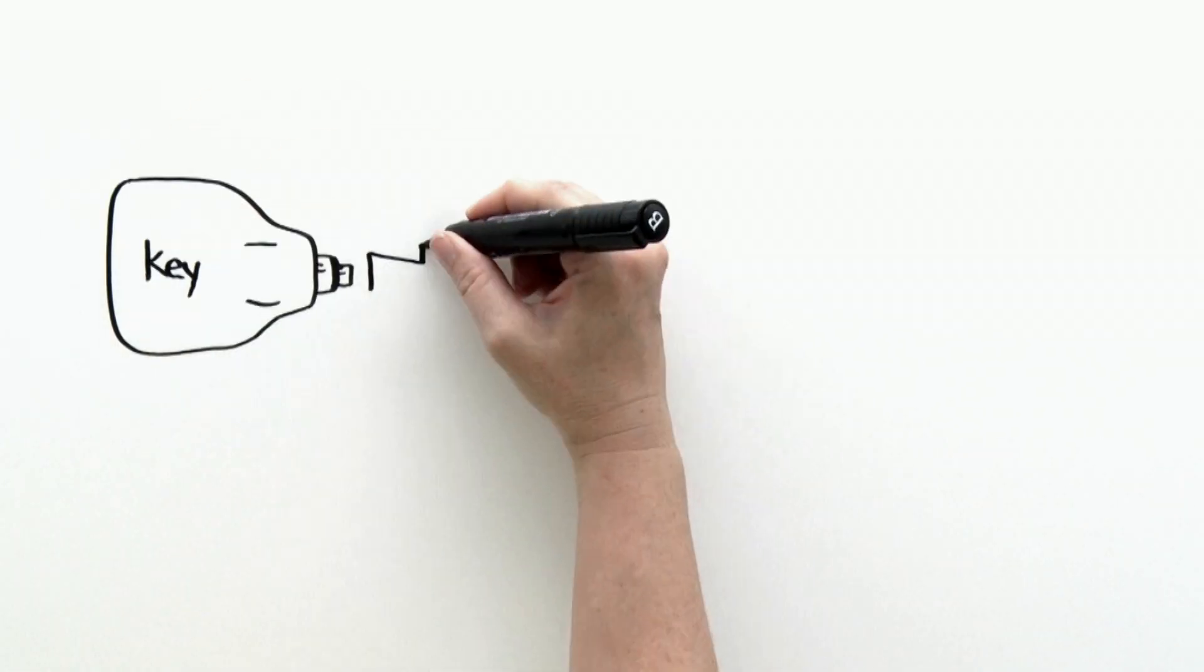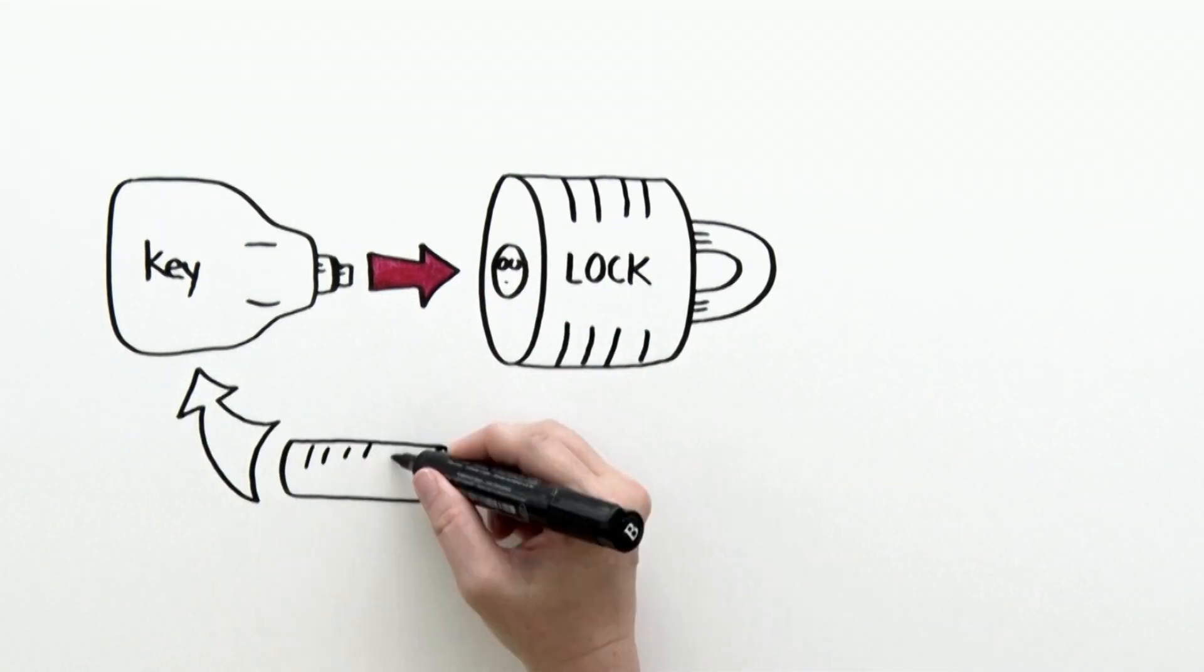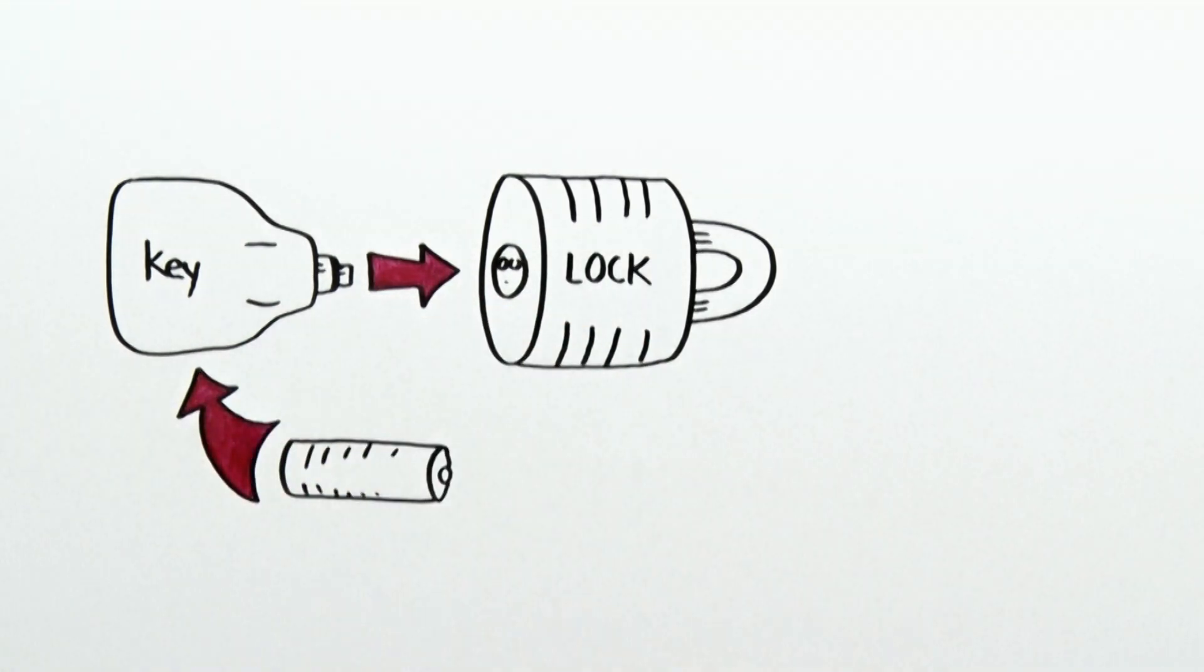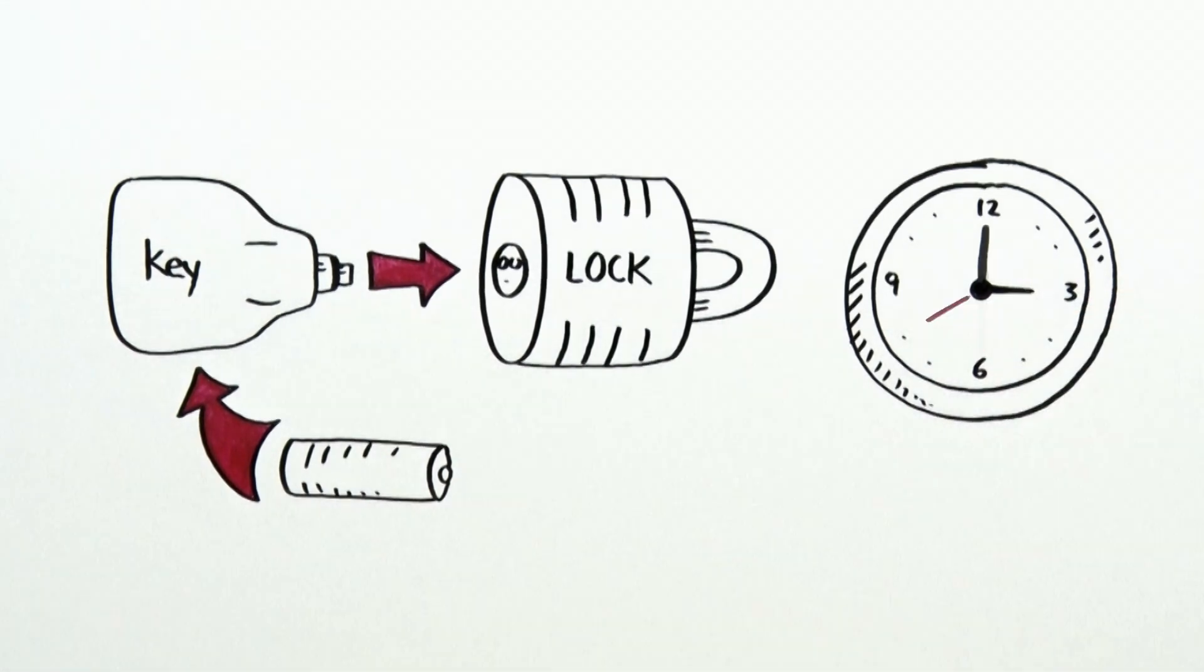He also learned that CyberLock e-cylinders will fit into his existing lock hardware and that they are powered by a battery in the smart key. For Bob, this means no need for hardwiring, which will make his installation and retrofitting a snap in just five minutes.